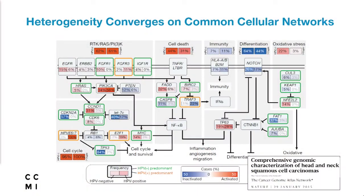A general meme in the past couple of years for how cancer genomicists are trying to grapple with this problem is the powerful idea that this heterogeneity converges on common networks in the cell. Here is a publication from Head and Neck Squamous Cell Carcinoma — another sequenced patient cohort — where the authors divided the world into five pathways shown as columns: a kinase set at far left, cell death, immunity, differentiation pathways, and so on. Individual gene mutations are seen rarely, but patients look much more similar at the pathway level, where a high percentage are mutated somewhere in some gene in one of those pathways.